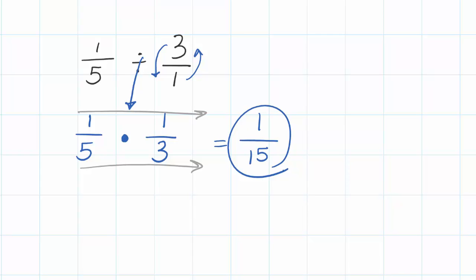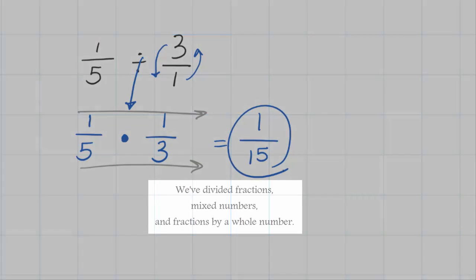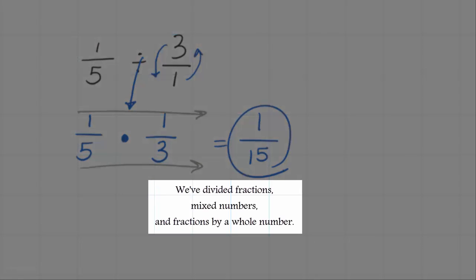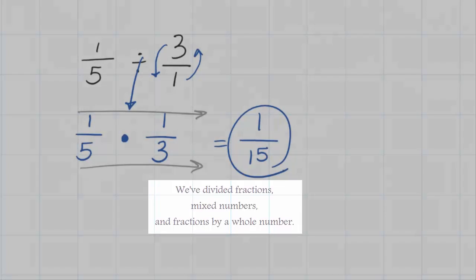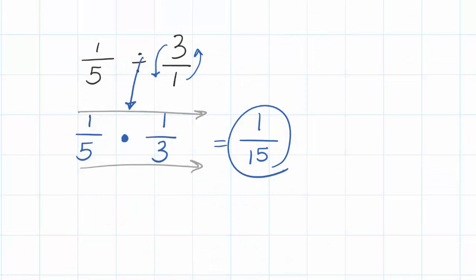So when I take one-fifth and divide it into three equal sections, I get one-fifteenth each. You've now got all three ways, and hopefully you'll have no problem dividing any sort of fraction, mixed number, or whole number.